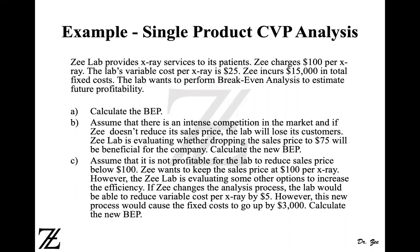Now we have three things to calculate. In part A, we need to calculate the break-even point. In part B, there is a minor change where the lab is trying to drop the price to $75 and see if the break-even point will increase or decrease. And in part C, they're still keeping the price at $100 but evaluating options to increase efficiency, which will reduce the variable cost per unit by $5. However, it will increase the fixed cost by $3,000.